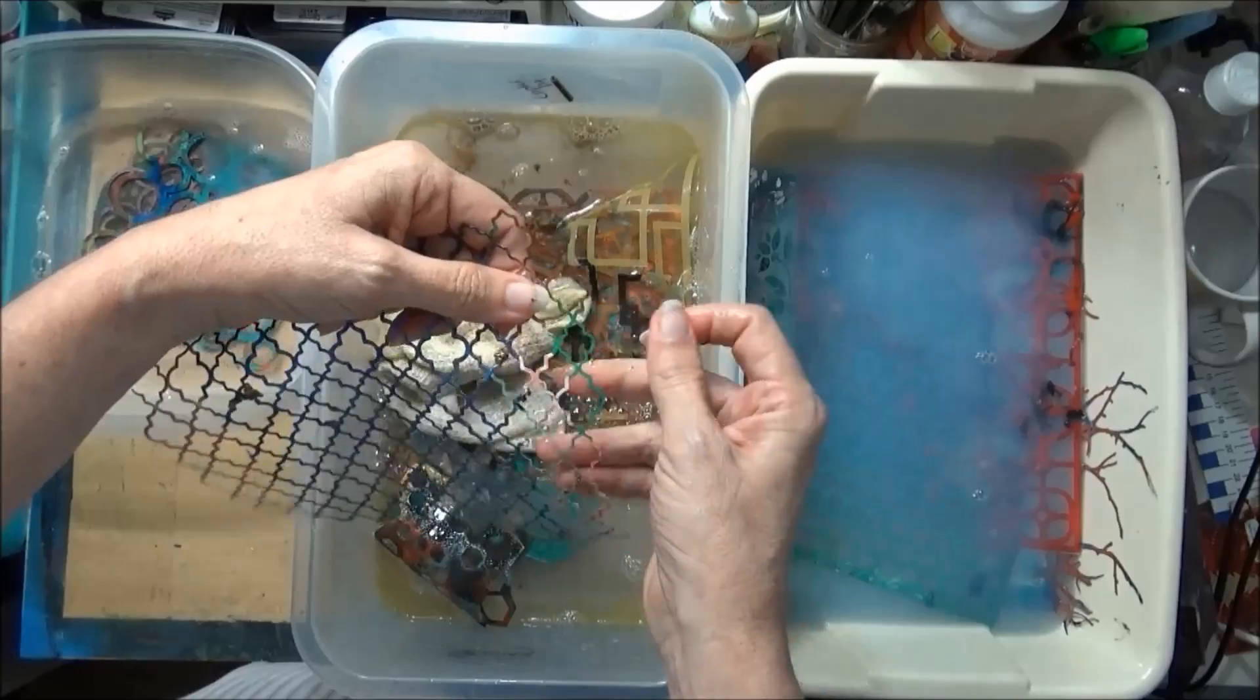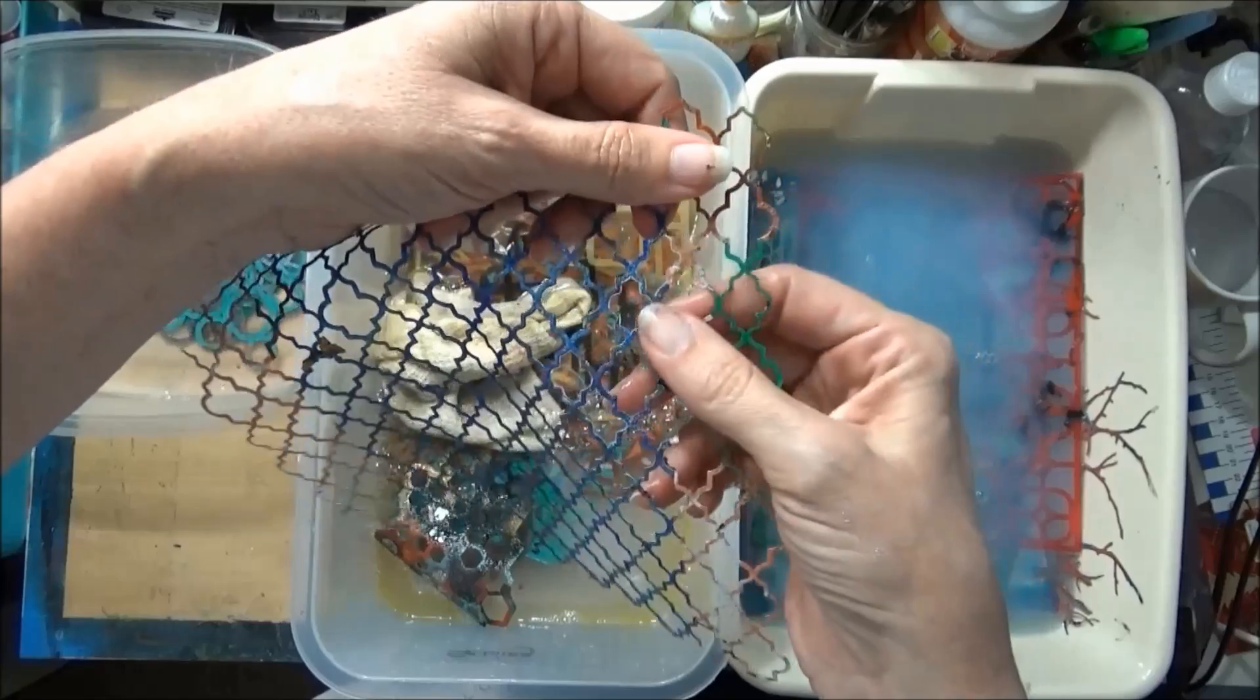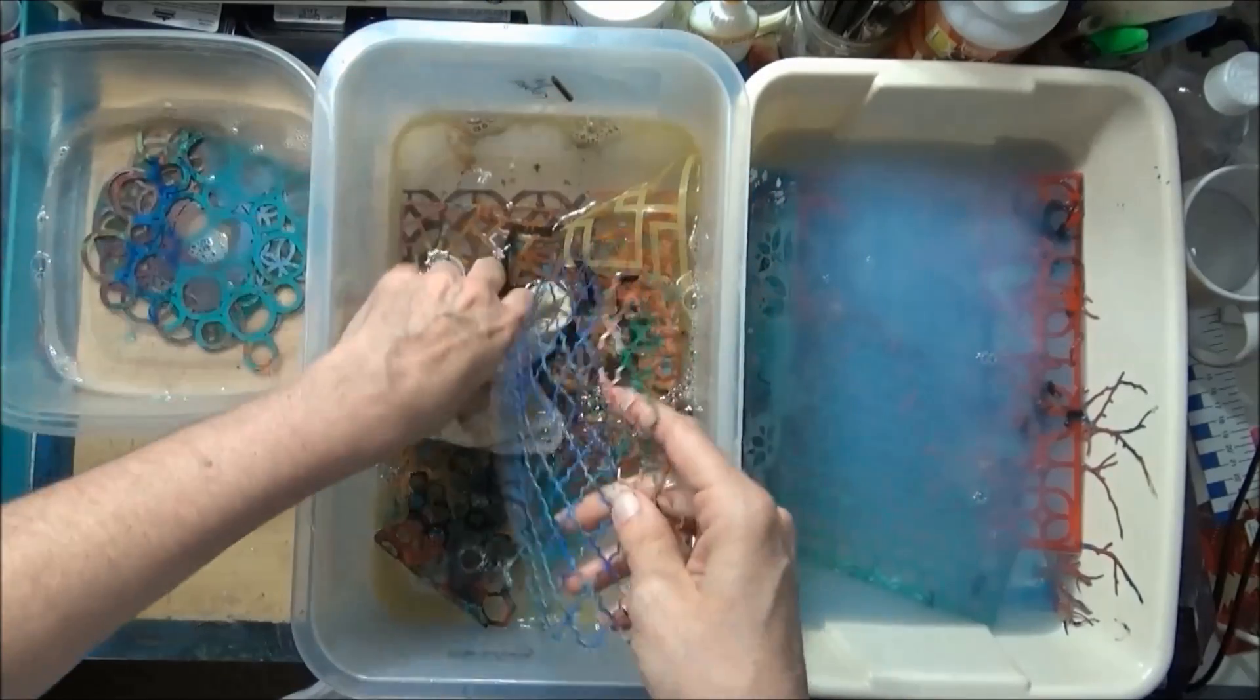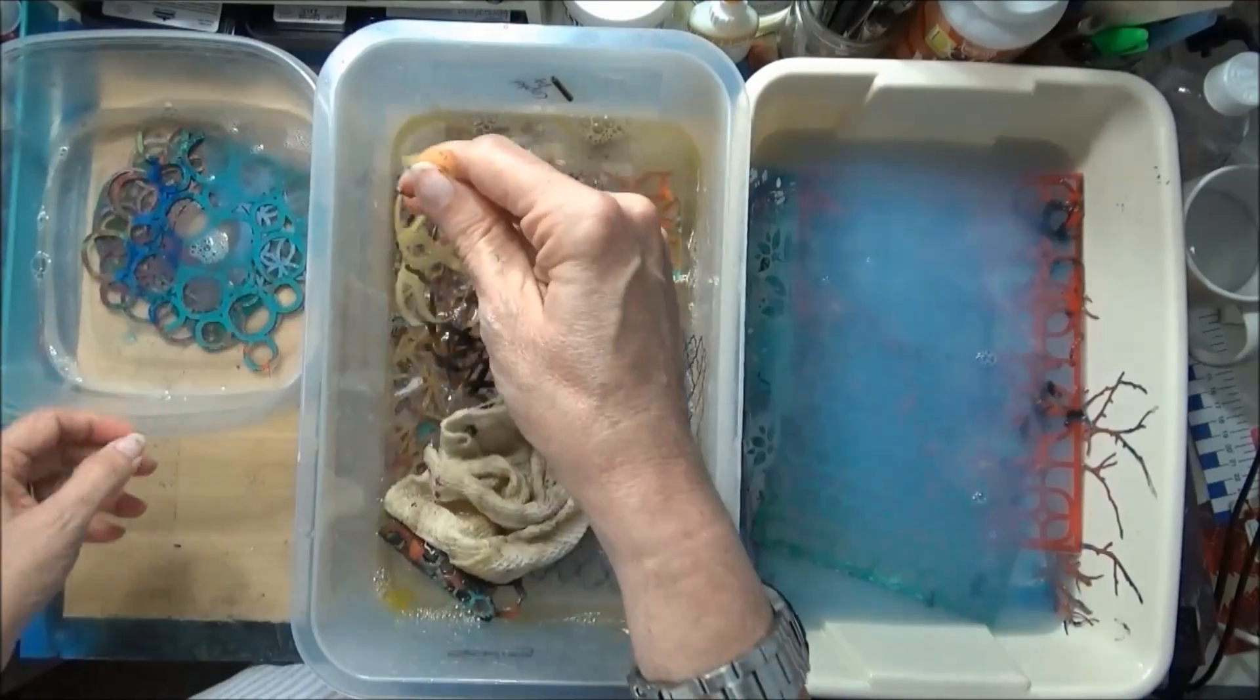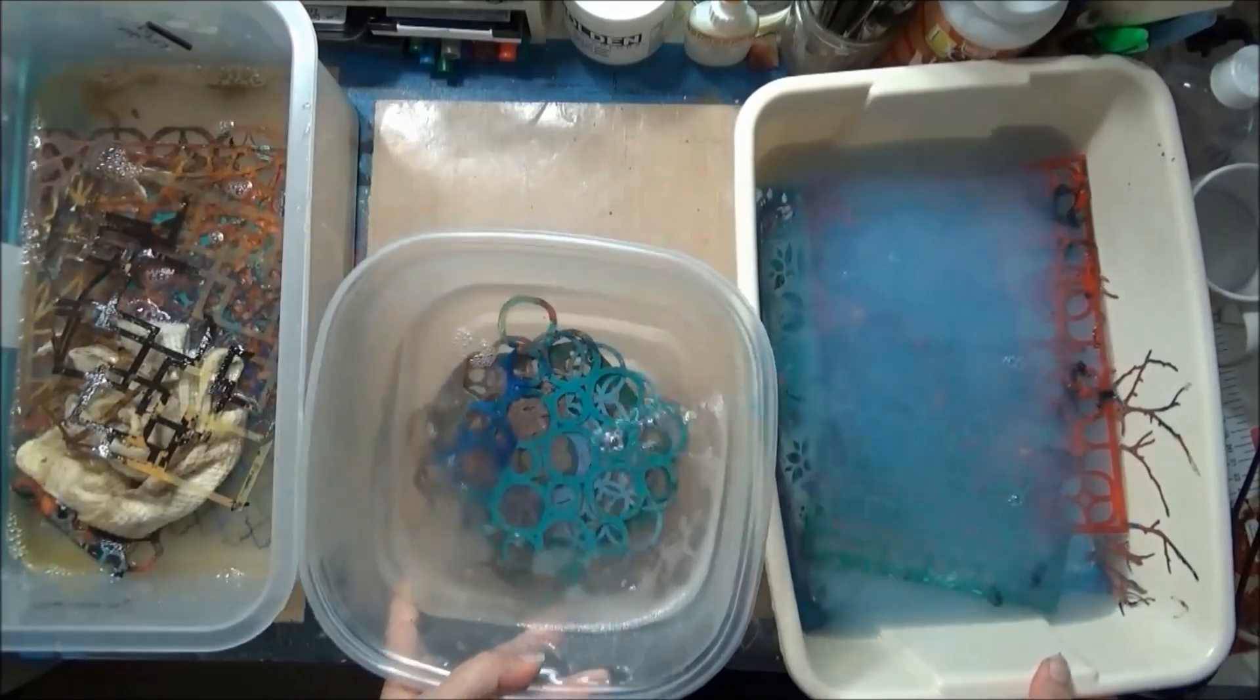But it really is just coming right off with just a little bit of pressure. It does work a little better in the Murphy's oil, but you can see even off the delicate stencils it will remove all the paint. Let me switch this out and put the baby oil in the middle.